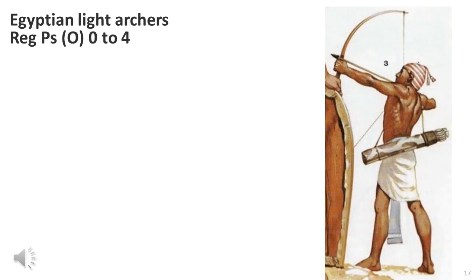Finally, some of the archers would have performed skirmish functions. The third smaller force, which flanked the city, may have consisted of this troop type, and this troop type could have numbered from between 2,000 and 4,000 men in total.